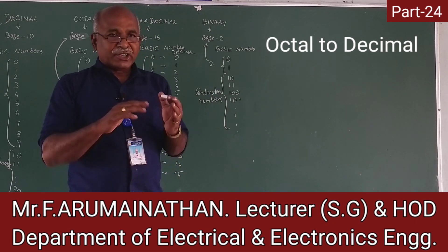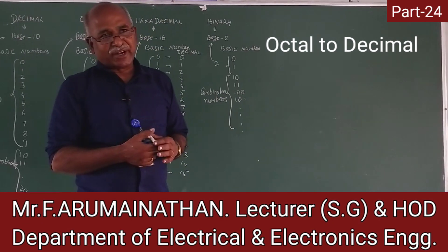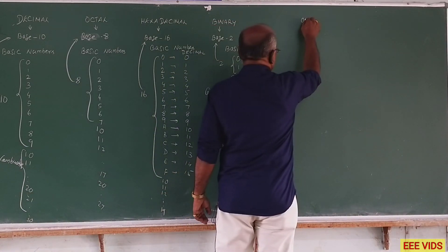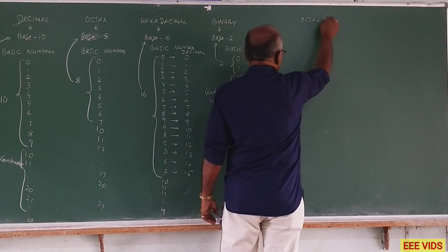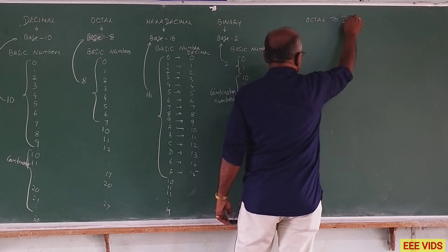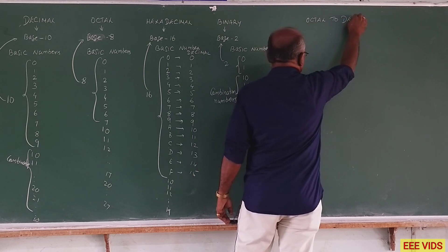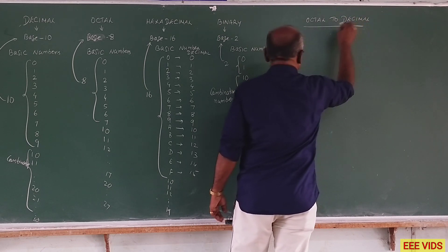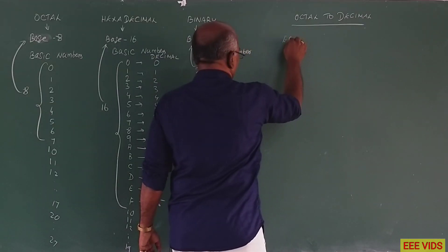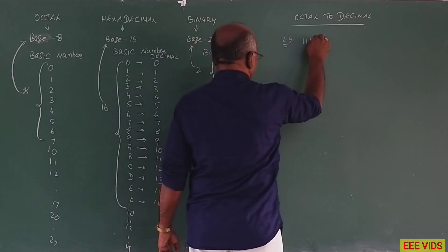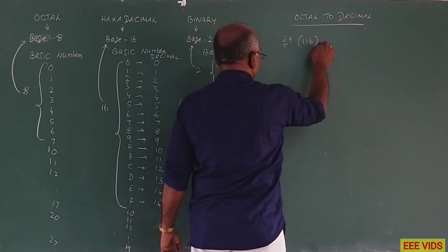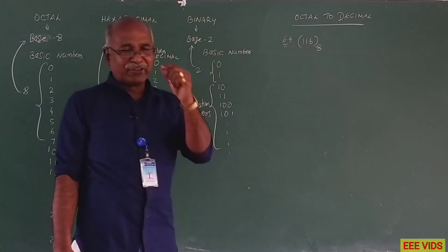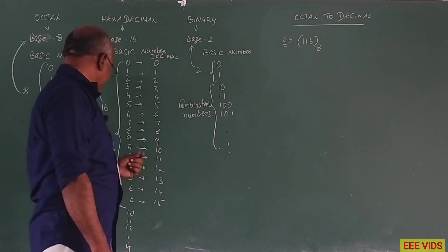Now, octal to decimal. We can convert octal to decimal. For example, one octal number is 116 in octal. The octal maximum character — one digit maximum value is 7.